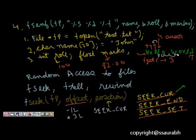And if I say SEEK_SET and plus 4L, so from the beginning one, two, three and four, so I would come at L. So this is about the random access to files.